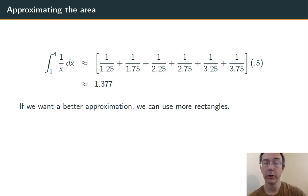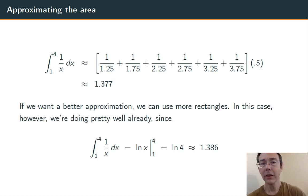If we want a better approximation, we can just use more rectangles. Instead of using 6 rectangles, we can use 10 or 20 or 1,000. In this case, though, we're doing pretty well already. If we actually carry out the definite integral, getting an antiderivative for 1 over x, natural log of x, plugging in 4, plugging in 1, and subtracting, remembering that the natural log of 1 is 0, we get 1.386. So we're not off by that much, even just using 6 rectangles.